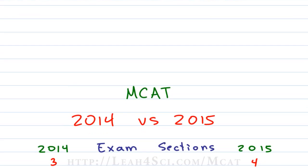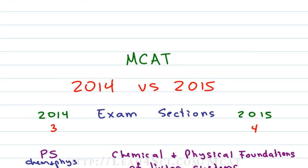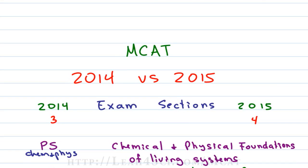So let's take a look. The 2014 or old MCAT had only three sections, while the new MCAT has four. The first section on the old exam was the physical science or PS section, which tested you on chemistry and physics through a combination of discrete and passage-based questions.